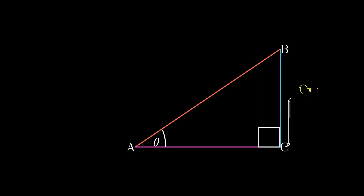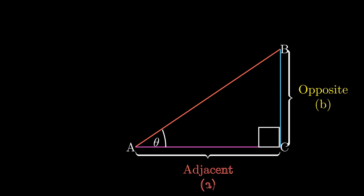The side BC will be called the opposite, represented by the letter b, and the side AC will be called the adjacent, represented by the letter a. Which leaves us with the side AB of this right angle triangle, and the side AB will be called the hypotenuse, represented by the letter c.